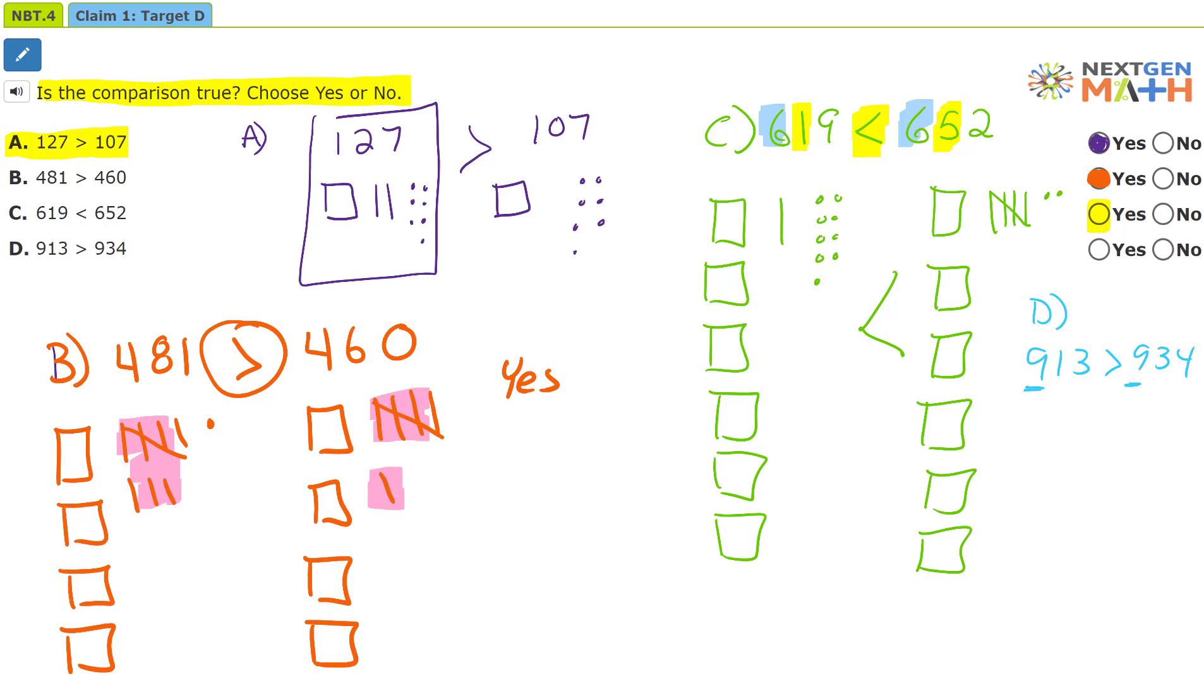So in the hundreds place, the hundreds are the same. Now when we look at the tens, the tens are different. We have 1 ten and 3 tens. Well, 1 ten is smaller than 3 tens. So that is wrong.